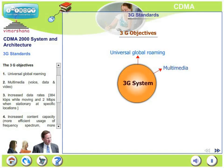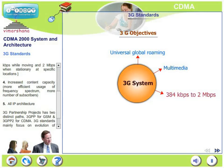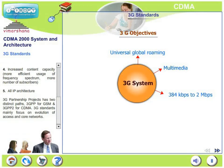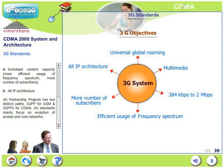3G supports multimedia — voice, data, and video. 3G supports increased data rates: 384 kilobits per second while moving and 2 megabits per second when stationary at specific locations. 3G also supports increased content capacity, more efficient usage of frequency spectrum, more number of subscribers, etc. And 3G is of course an all-IP structure. 3GPP has two distinct paths: 3G is a standard for GSM and 3GPP-2 is a standard for CDMA.